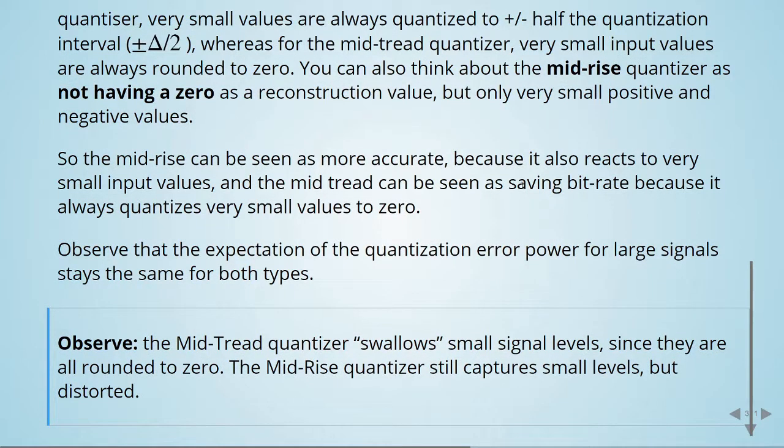We can also observe that the mid-tread quantizer swallows small signal levels, since they are all rounded to zero, and the mid-rise quantizer captures the small values, but distorted.